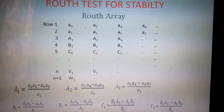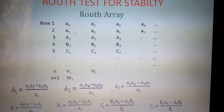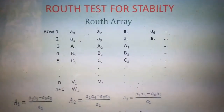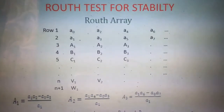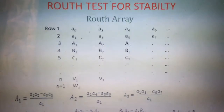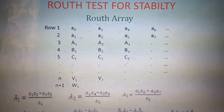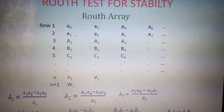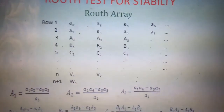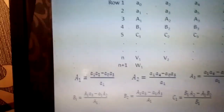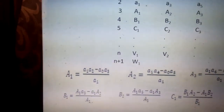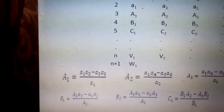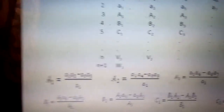Now let us see how we can construct the Routh array. The Routh array is in matrix form. The first two rows are filled by the coefficients a0 through an alternately — that is, a0, a2, a4, a6 in the first row, and a1, a3, a5 in the second row — alternate coefficients. Then the third row element b1 is determined using the formula: b1 equals (a1·a2 minus a0·a3) divided by a1, which is the cross multiplication as done in the matrix.